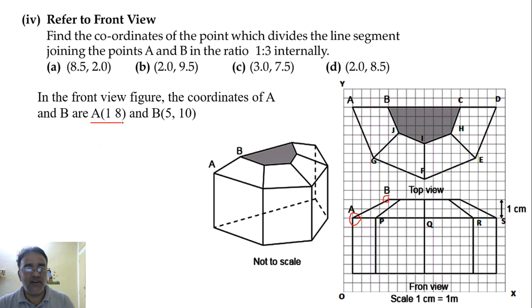So A is (1, 8) that we have already seen in the third question, and B is (5, 10). So let us, let C be the point which divides the line joining these two points in the ratio 1:3. So here we use the section formula. The section formula is (m1·x2 + m2·x1)/(m1 + m2) for x-coordinate and (m1·y2 + m2·y1)/(m1 + m2) for y-coordinate. So this will be (1×5 + 3×1)/(1 + 3), the sum of ratio. And next one is (1×10 + 3×8)/(1 + 3).